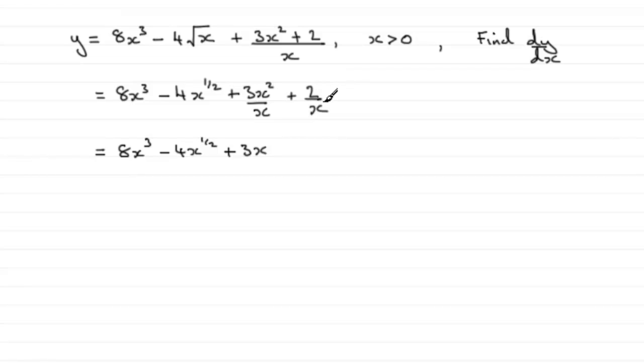And 1 over x can be written as x to the power minus 1. So again, if you're unsure of indices like this, negative power indices, then again, you can see tutorials on my website on this. So we now have each of the four terms in the right format.